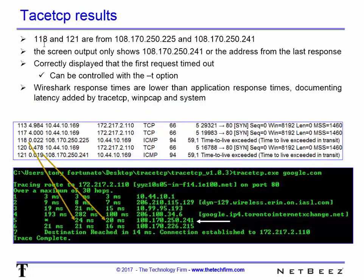On the results side, packets 118 and 121 are from 225 and 241, but the tool only reports 241 — the last router — and it doesn't tell you anything about 225. So if you run this tool and there are multiple routes, you will get the last one that came back. That first star really did not come back — it's not a bug, it just timed out. You can control the timeout option using a dash T. For performance measurements, at the wire level it's 22 milliseconds, but in the application it shows 24 — that's because it has to go through WinPCAP through the application to get to the screen, so there's a little added latency.